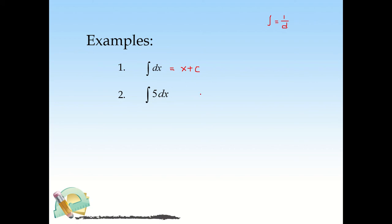For the integral of 5·dx, using the formula for a·dx, you isolate the constant a = 5 and take the integral of dx. The integral of dx is x, so this equals 5x + C.